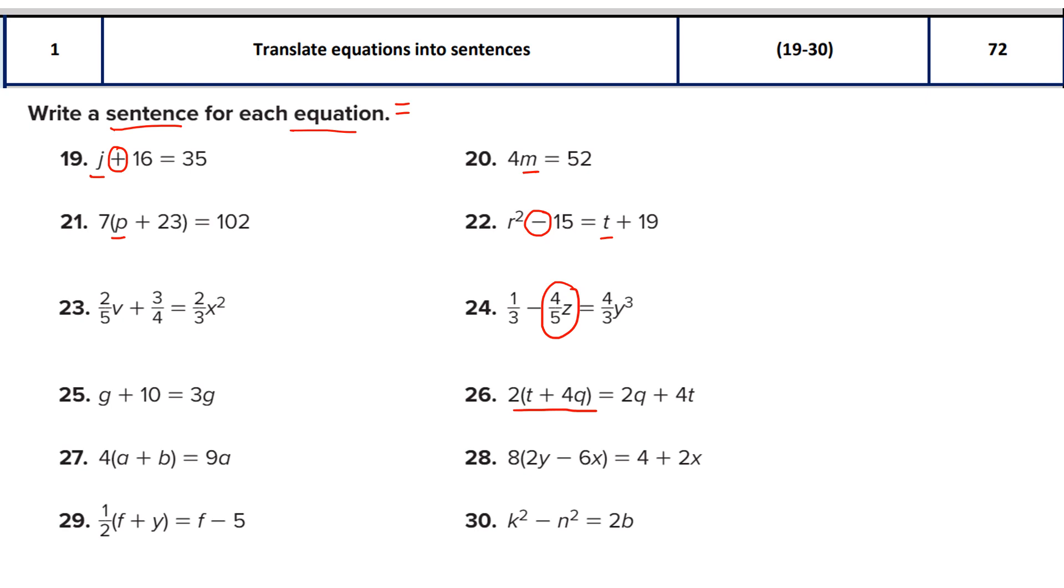We begin with question 19. So here you see addition, that means the sum is happening, you are adding two things. We can convert this equation into a sentence in this manner. So the sum of - of which two quantities? One is the variable j and the second quantity is the number 16, and 16 is equal to how much? Is equal to 35. So either you can write is equal to or you can simply write is 35.